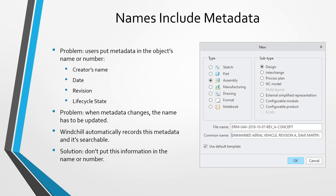Very similar to the first mistake, a lot of times I'll see people include information in the file name that is already metadata captured by Windchill or your PLM system. For example, people put their initials, the date they created it, maybe the revision, maybe the lifecycle state like concept, in-work, or released. That is information that is all tracked by Windchill. And if you ever make a change to your model — say you revise it — that revision is no longer going to be correct in the file name. Since Windchill already captures all this information and it's already searchable, use whatever standard naming convention your company gives you.